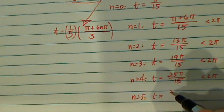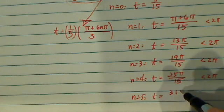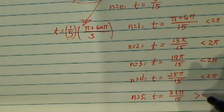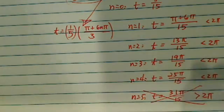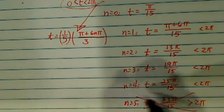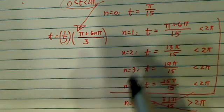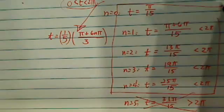That's 31 pi over 15, and that's bigger than 2 pi. So we'll cross this one out. Okay, so all the unique answers that's between 0 to 2 pi are laid out here.